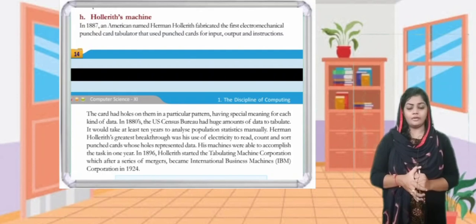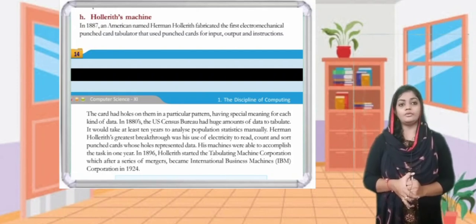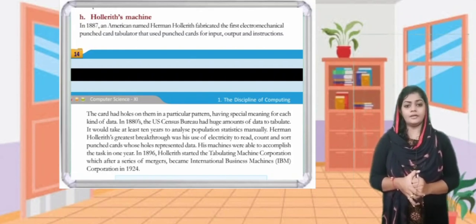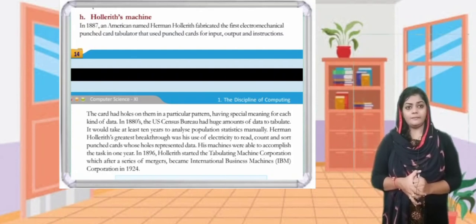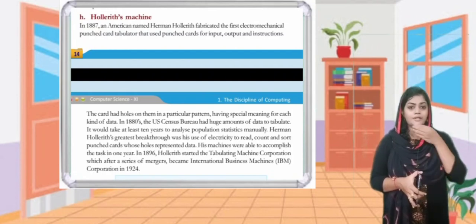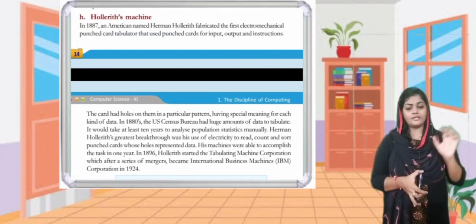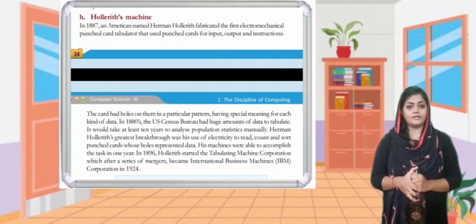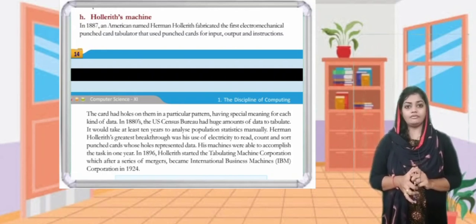Our first topic: the Hollerith machine. In 1887, an American named Herman Hollerith fabricated the first electromechanical punched card tabulator that used punched cards for input, output, and instructions. The card had holes on them in a particular pattern, having special meaning for each kind of data.